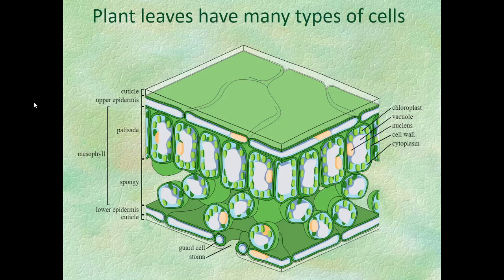A leaf is made of many cells. There are large flat cells called the cuticle. Below are the palisade cells, which contain those little green dots called chloroplasts — that's where photosynthesis happens. Underneath the palisade cells are the spongy cells, which also have chloroplasts. There's another layer of epidermis and cuticle cells at the bottom. There are also cells called stomata made of guard cells that help open and close the leaf. Leaves have enormous amounts of photosynthesis occurring throughout them.